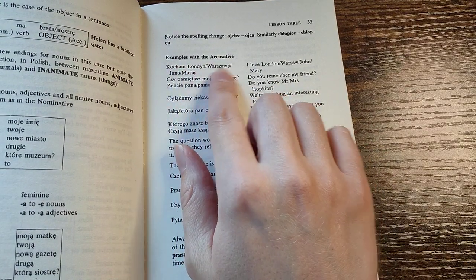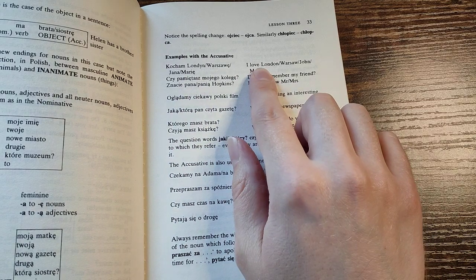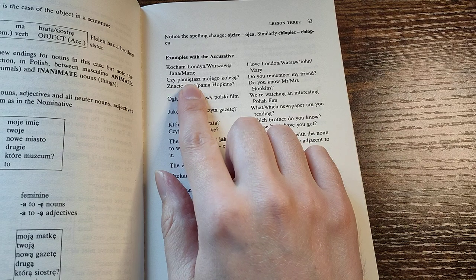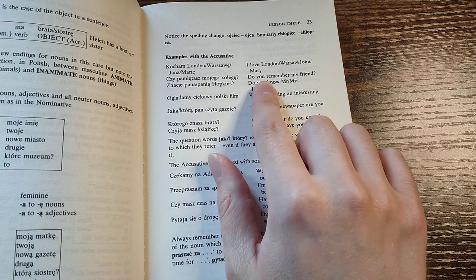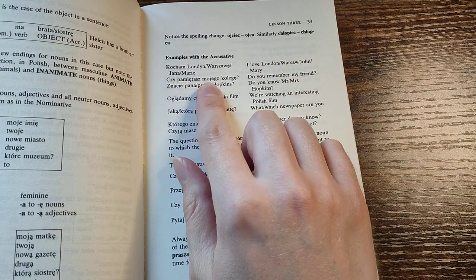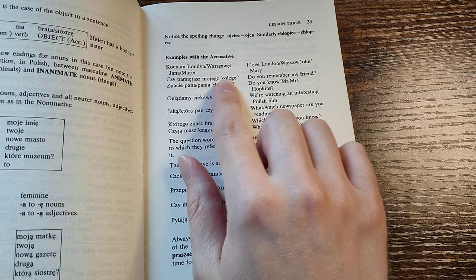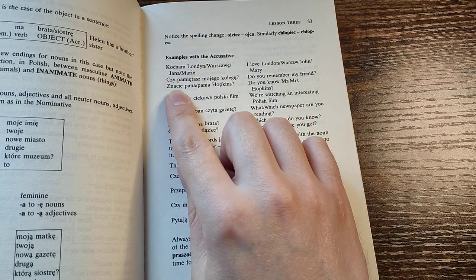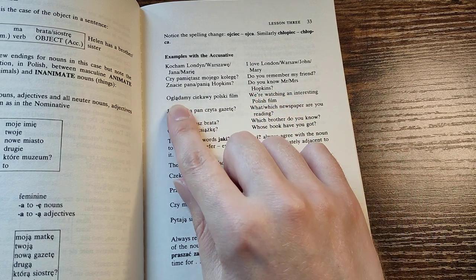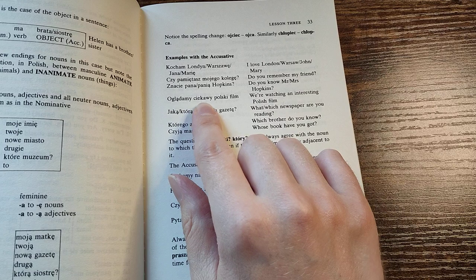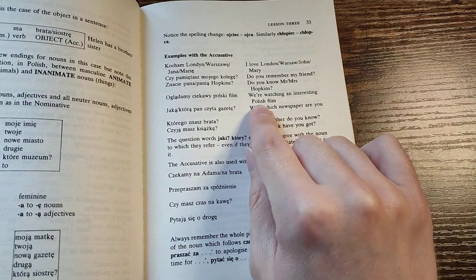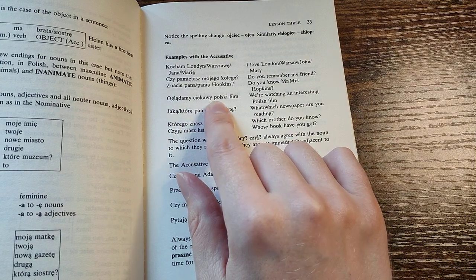Okay, so London, Warszawa, Jana Marie. I love London. Also John, Mary. Do you remember my friend? Znaczy pana Hopkins. Do you know Mr. Hopkins? Ogłodymy. Czekowy polski film. We're watching an interesting Polish film. Czekowy. Interesting. Ogłodymy. We are watching.